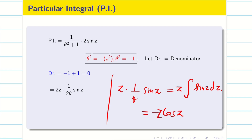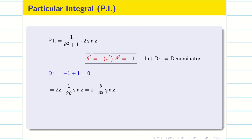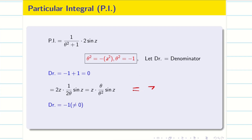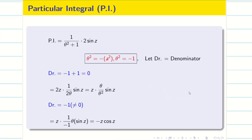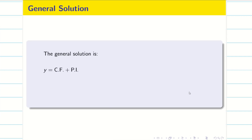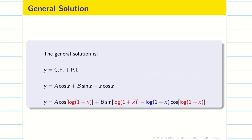Alternatively, if you are not confident with integration, multiply and divide by θ so the denominator becomes −1, and then θ(sin z) = cos z, giving −z cos z as the final PI. Writing CF + PI: a cos z + b sin z − z cos z. Substituting back z = log(1 + x), the general solution is a cos(log(x+1)) + b sin(log(x+1)) − log(x+1) · cos(log(x+1)).